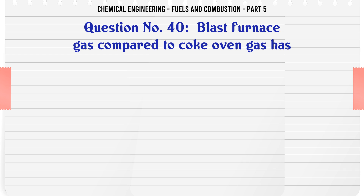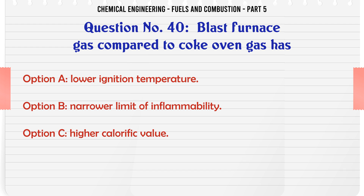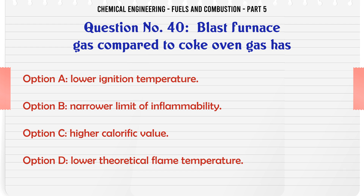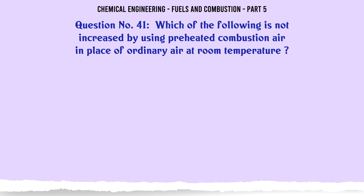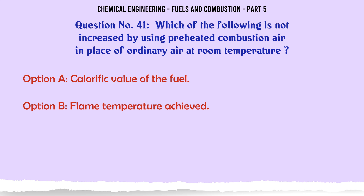Blast furnace gas compared to coke oven gas has: A. Lower ignition temperature. B. Narrower limit of inflammability. C. Higher calorific value. D. Lower theoretical flame temperature. The correct answer is lower theoretical flame temperature.